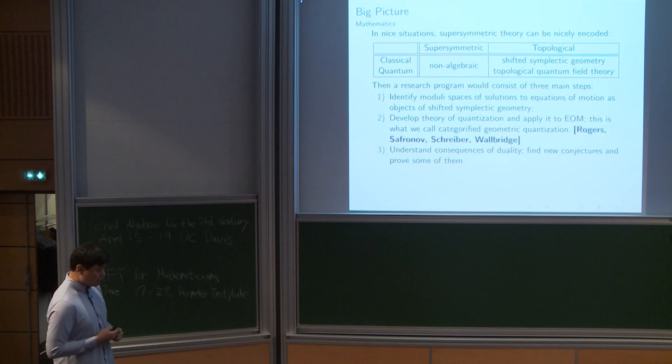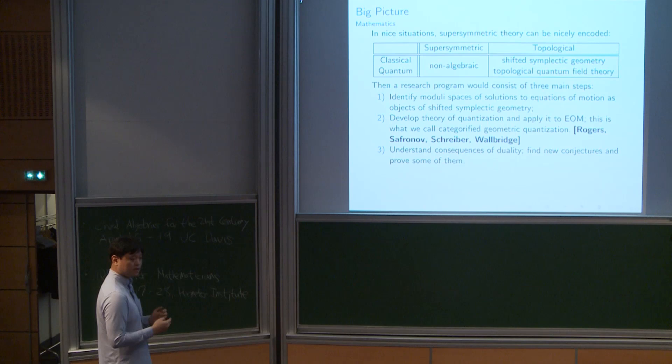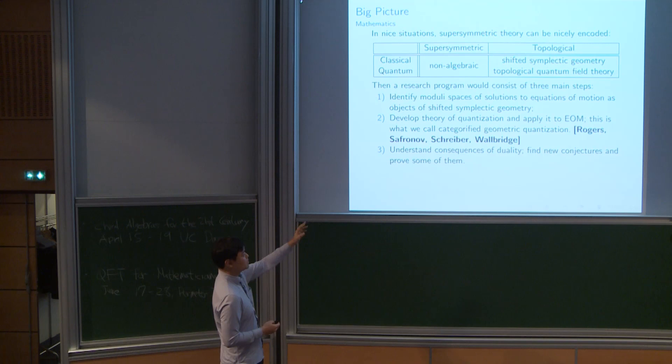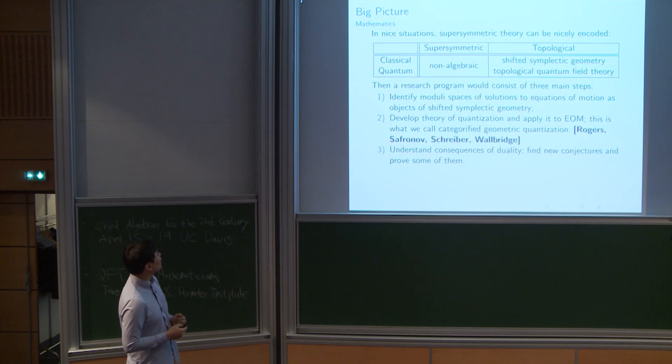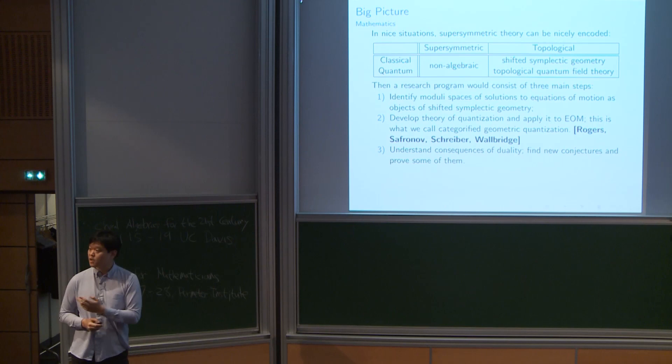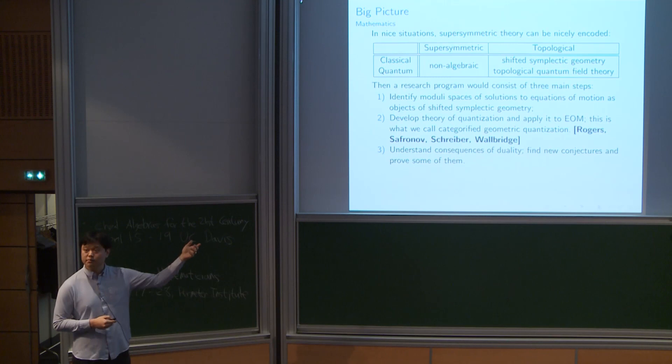Third, once you understand these, you can try to understand the consequences of the duality that physicists studied. Applying this idea, you find new conjectures that one can try to prove. Our main contribution is more to making the framework for steps one and two. Sasha's talk was more like the third part — finding consequences of duality and proving the conjectures.